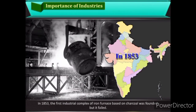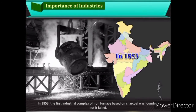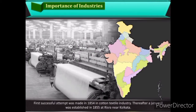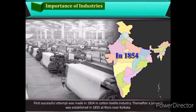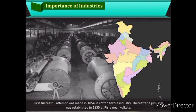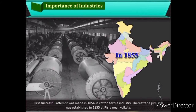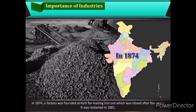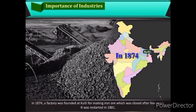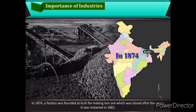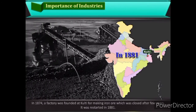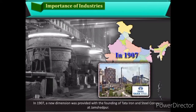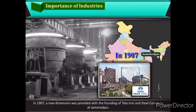In 1853, the first industrial complex of iron furnace based on charcoal was founded, but it failed. The first successful attempt was made in 1854 in the cotton textile industry. Thereafter, a jute mill was established in 1855 at Risra, near Kolkata. In 1874, a factory was founded at Kulti for making iron ore, which was closed after a few years and restarted in 1881. In 1907, a new dimension was provided with the founding of Tata Iron and Steel Company at Jamshedpur.